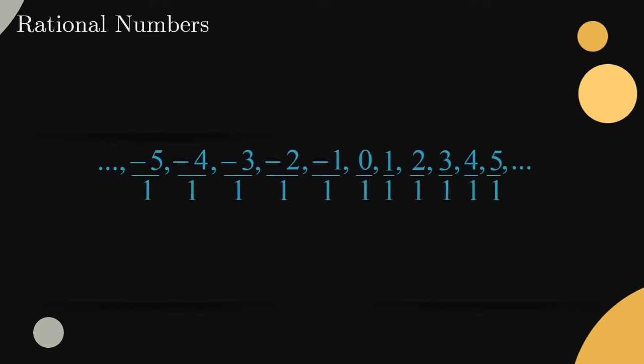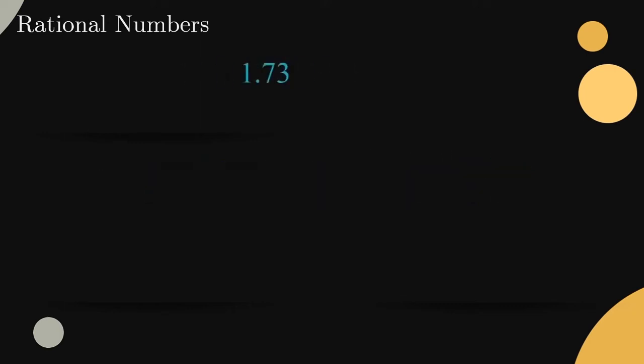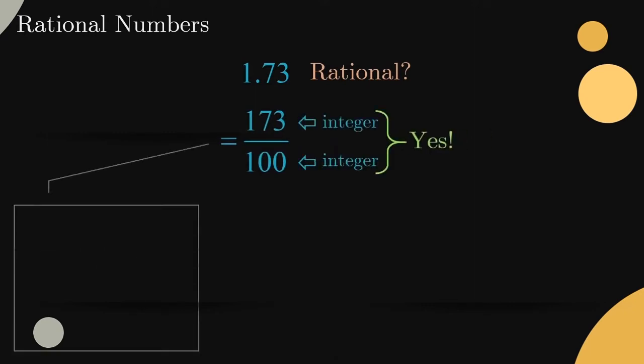Sometimes it's not as obvious that a number is rational. For example, consider the number 1.73. Can we write this number as a fraction using only integers? We most certainly can—it's 173 over 100. To arrive at this result, we could use the fact that division by 100 ultimately moves the decimal point back two places.